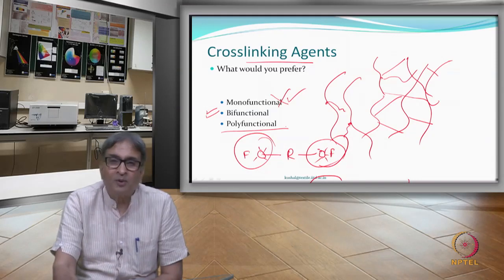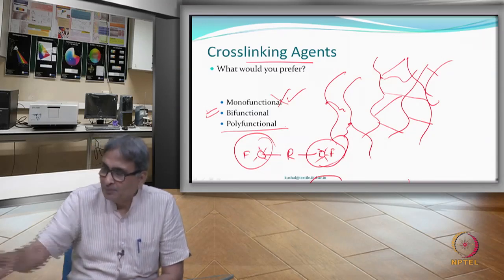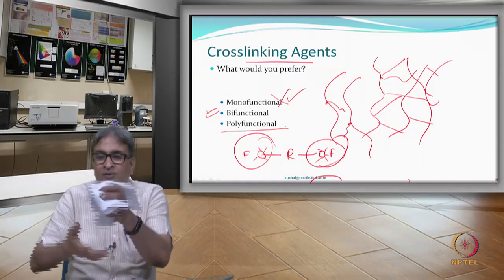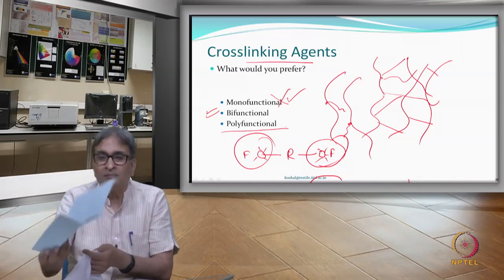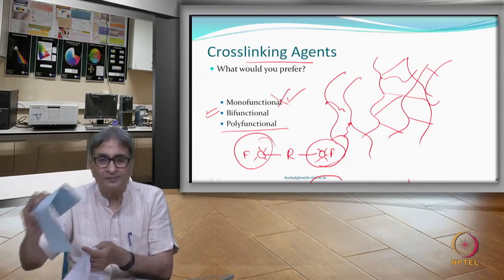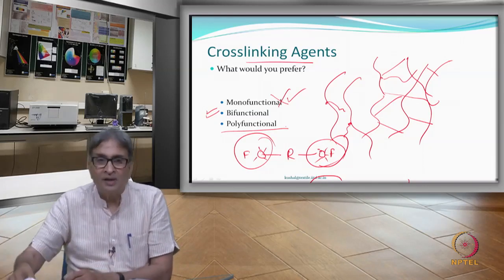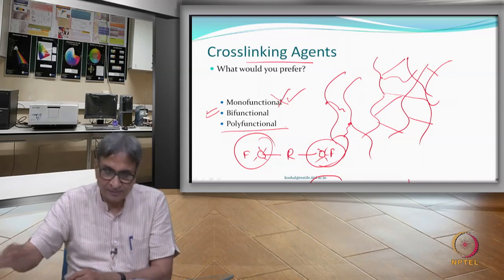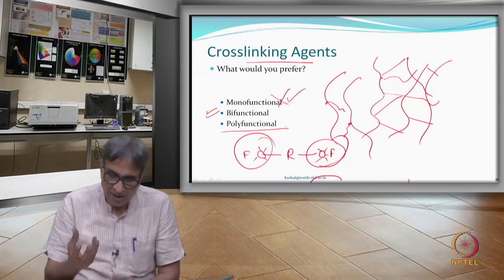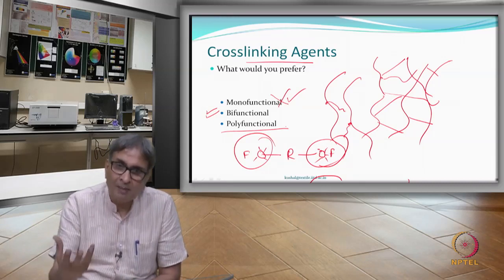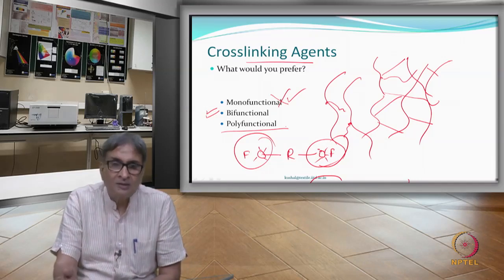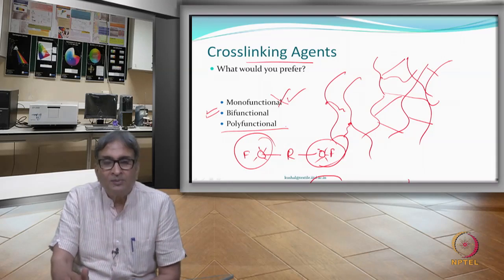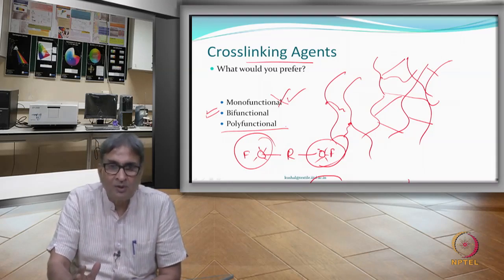But a polyfunctional agent may change some properties you do not want. See this fabric — it is so soft. If it becomes stiff like paper, you may not be able to wear it. So polyfunctional cross linking agents can create a three-dimensional network that makes the fabric stiffer. Unless stiffness is required, it may not be a good idea. Generally people prefer bifunctional agents, though polyfunctional agents can also cross link.